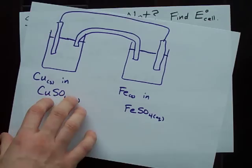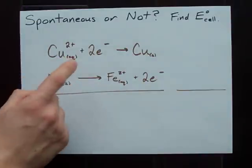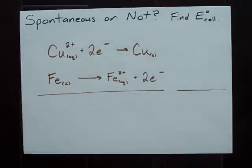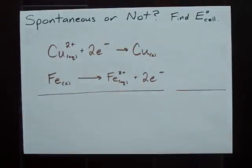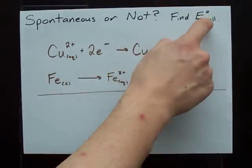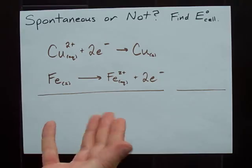We do that by writing down the half reactions that we think are going to happen, looking them up in a table of reduction potentials, and then adding them together to see what value we get for E not cell.